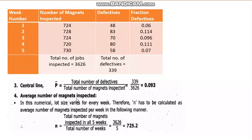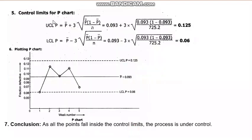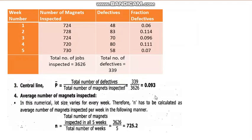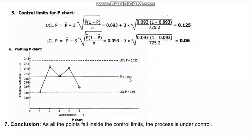The average number of magnets inspected per week (small n) = total inspected divided by 5 weeks = 725.2. Now the control limits for the P chart are calculated using the two standard formulae with P-bar and small n. P-bar is found to be 0.093, which is the center line.